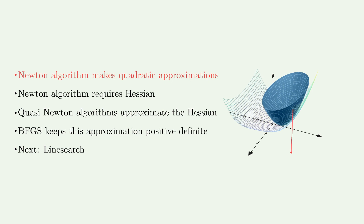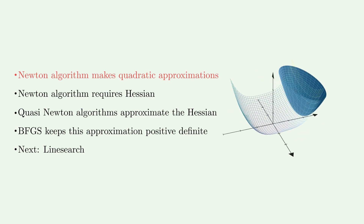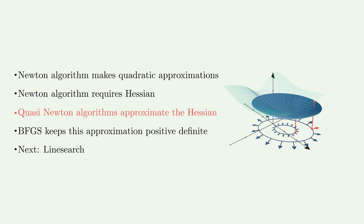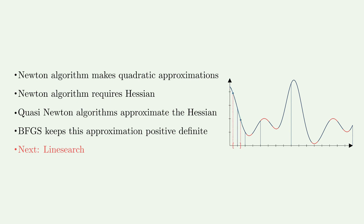To summarize: the Newton algorithm minimizes a function by successively creating quadratic approximations and minimizing them, but requires the Hessian matrix. If the Hessian is not available, quasi-Newton algorithms approximate it using gradient information and the assumption that the Hessian should not vary much between iterations. BFGS is one example of a quasi-Newton algorithm with the important property that it keeps the Hessian approximation positive definite. Most implementations, including SciPy's, do not simply use the minimum of the quadratic approximation directly, but instead use it as a direction in which to search — this is called a line search and will be the topic of the next video.